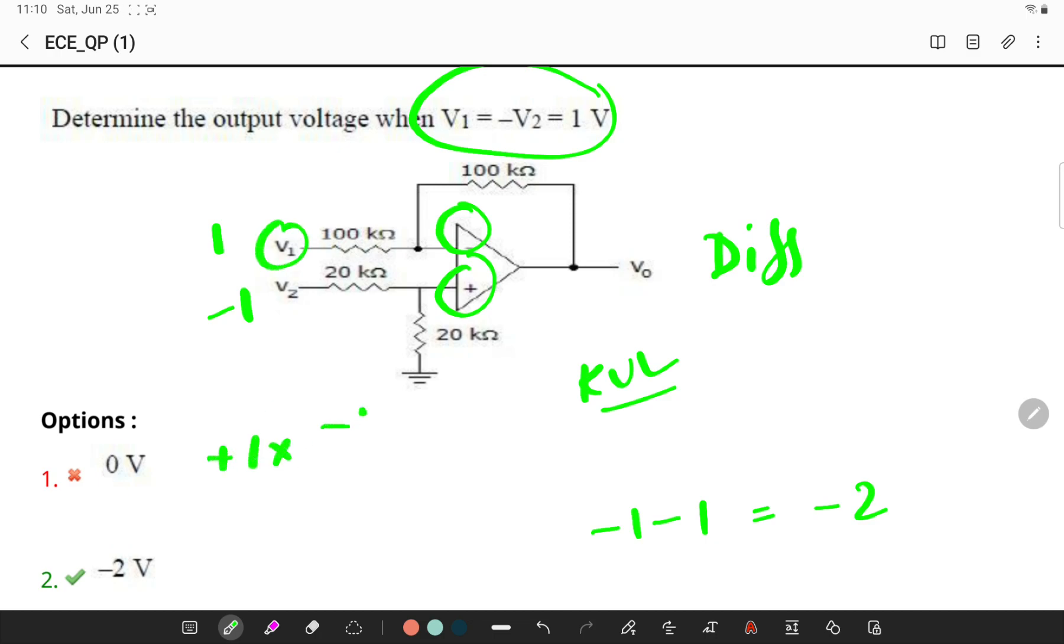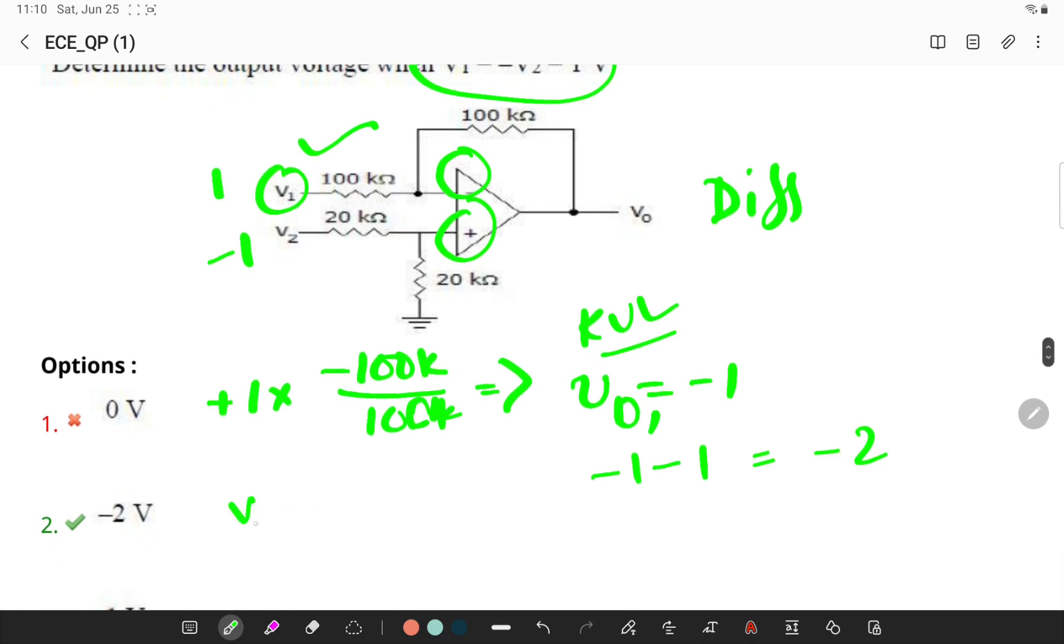Now, apply your input to the first negative terminal. Minus 1 into minus 100K, minus R2 by R1. You will get V1 as minus 1, V out 1, considering only the negative terminal. Next, consider the positive terminal. In this case, 1 plus RF by R1. Your input will be 20K by 20K plus 20K into minus 1 which is nothing but 20 by 40 into minus 1 or I can say minus 1 by 2.